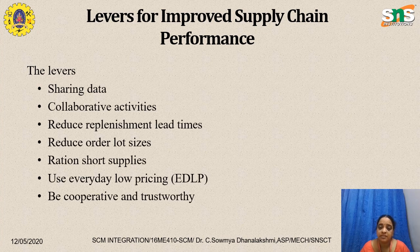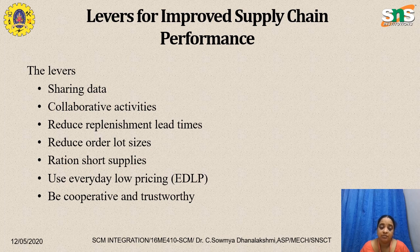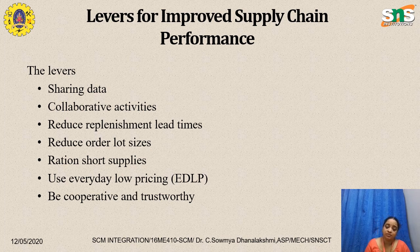Some levers for improved supply chain performance and supply chain integration include: sharing data, collaborative activities, reducing replenishment lead times through CPFR, reducing order lot sizes so that quality inspection can be done more effectively, reducing the generation of short supplies, using everyday low pricing (EDLP), and being cooperative and trustworthy. These act as levers for increasing supply chain integration.